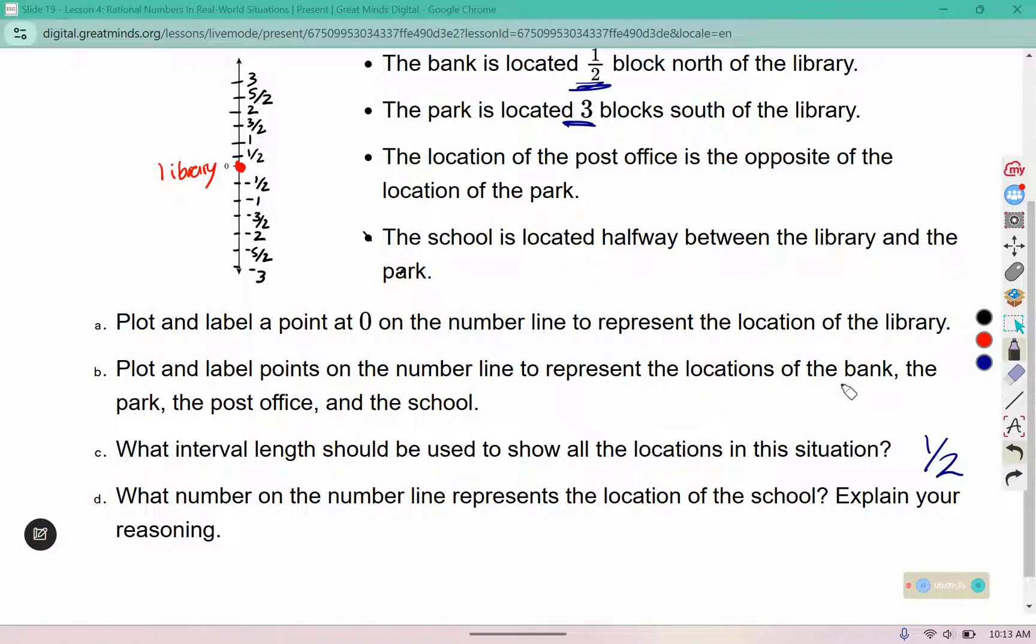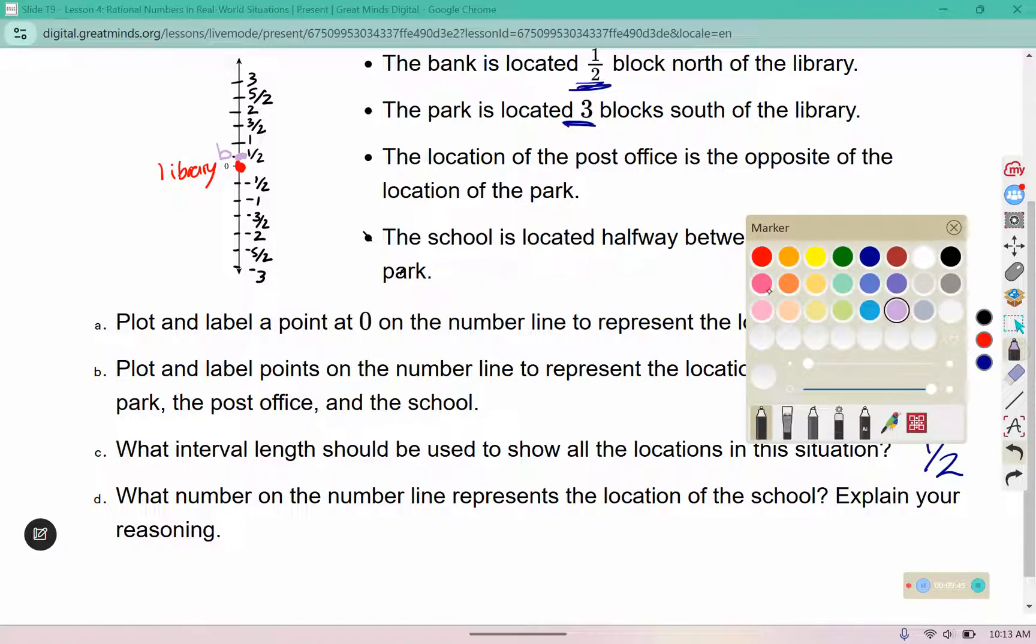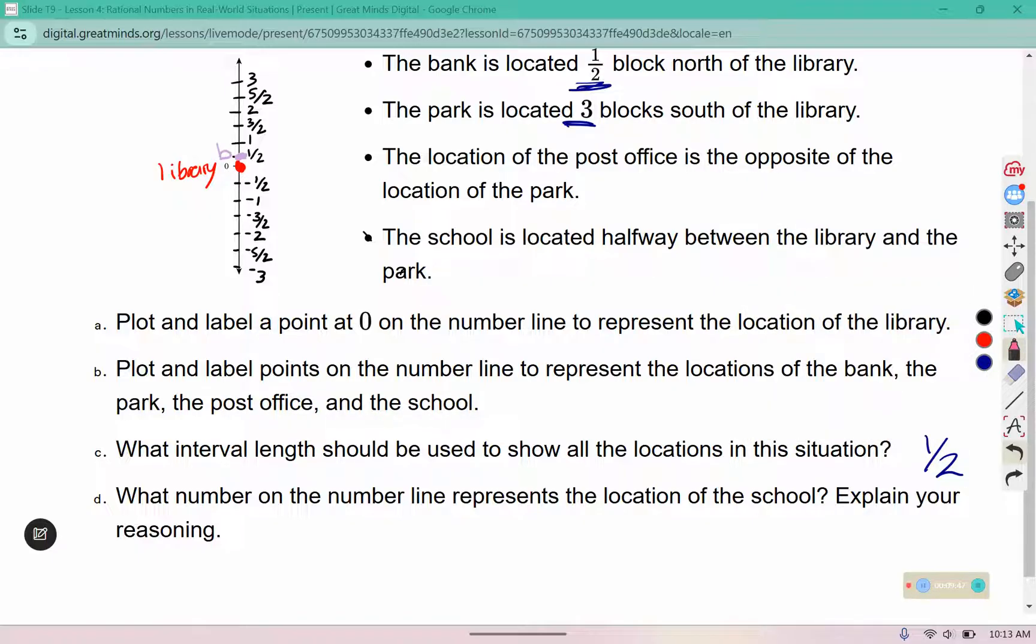So we're going to plot the point for the bank. The bank is a half a block north, meaning positive. I'm going to put a little B here to represent the bank. Then I need to plot the location of the park. The park is three blocks south of the library, so south is below, this is the park.